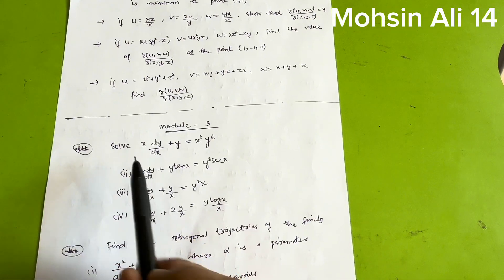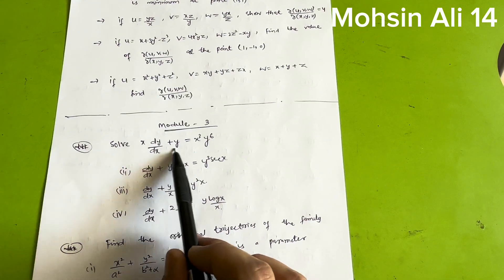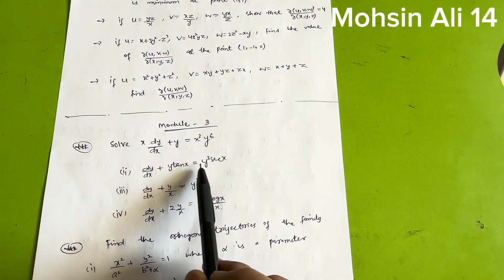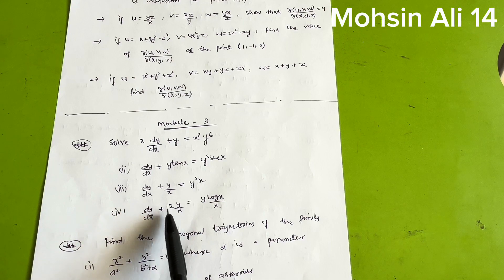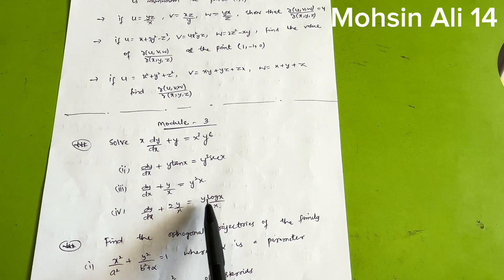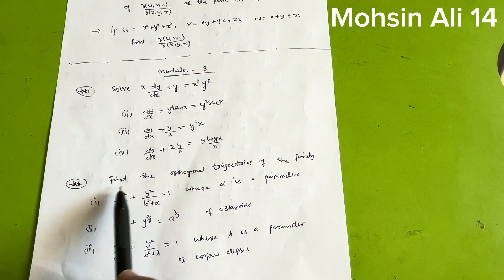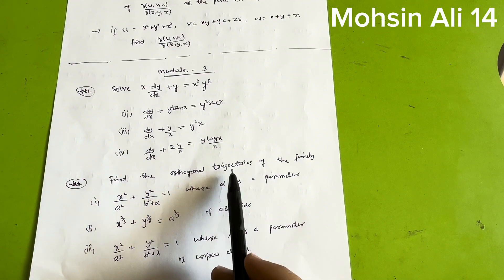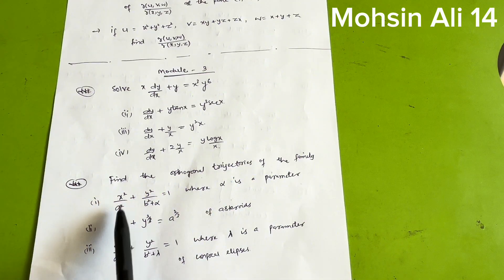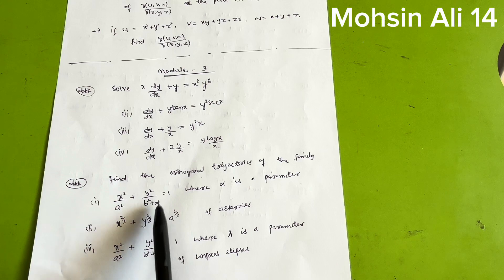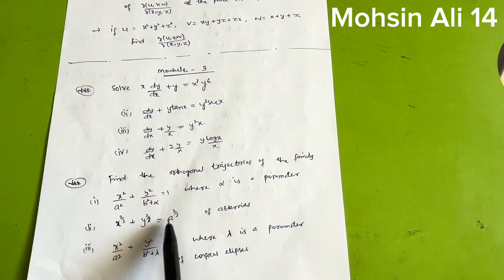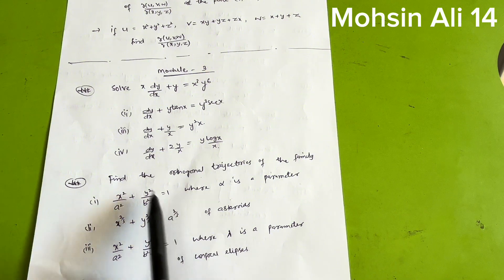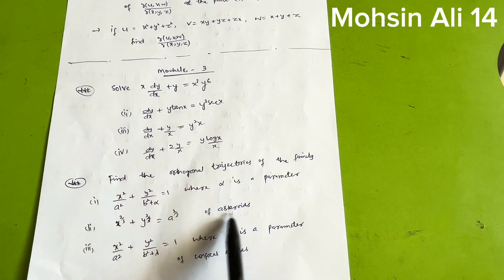For Module three, practice these differential equations: x·dy/dx + y = x³·y⁶; dy/dx + y·tan(x) = y³·sec(x); dy/dx + y/x = y²·x; and dy/dx + 2y/x = y·log(x)/x. Also very important: find orthogonal trajectories of x²/a² + y²/b² + α = 1 (parameter α), and x^(2/3) + y^(2/3) = a^(2/3) which is the family of asteriods.